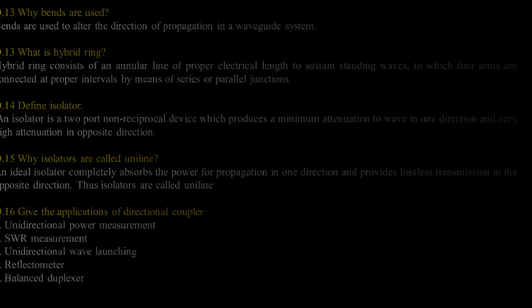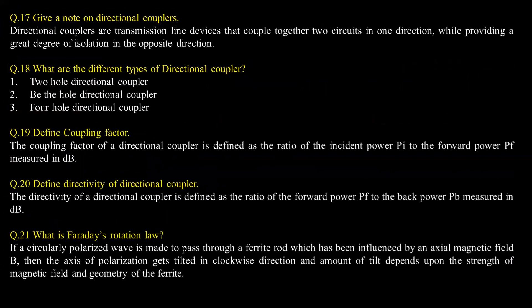Give a note on directional couplers. Directional couplers are transmission line devices that couple together two circuits in one direction while providing a great degree of isolation in the opposite direction. What are the different types of directional couplers? There are three types: two-hole directional coupler, bethe-hole directional coupler, and four-hole directional coupler.